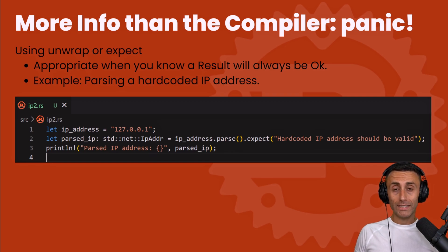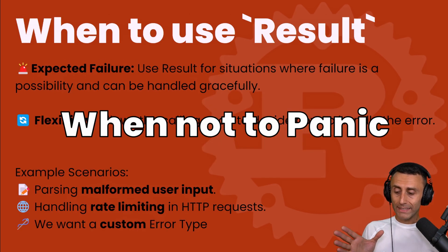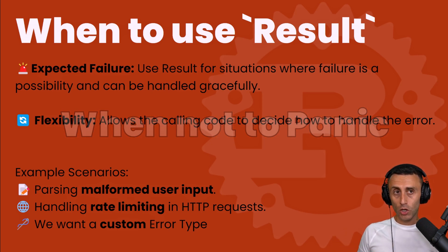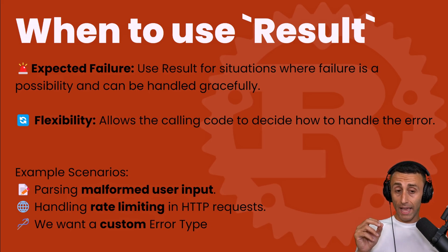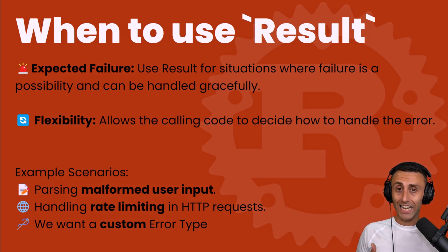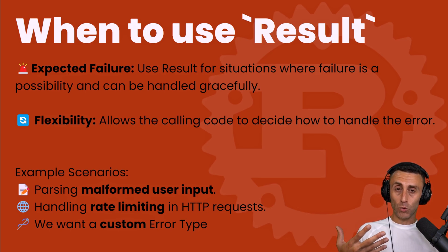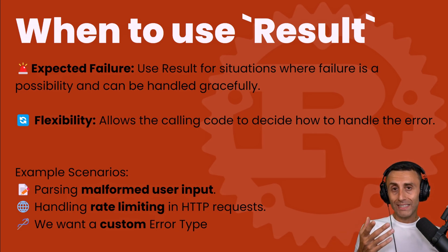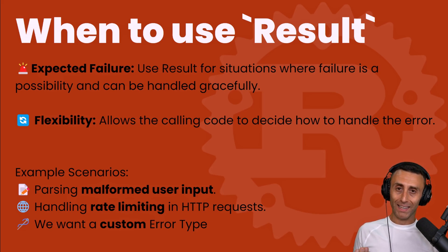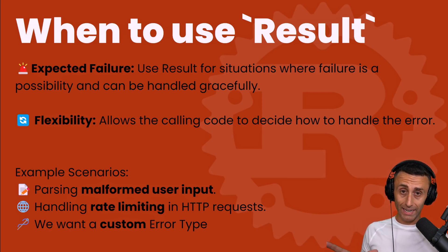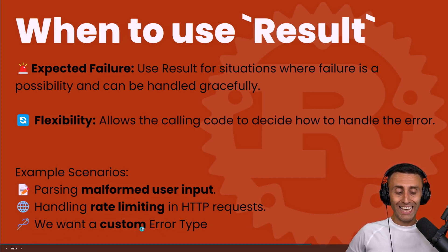Now let's see when to use result. Result is used to handle errors when we have an expected failure. A clear use case is HTTP requests, where we handle codes like 200, 300, and 400. Another use case is when we want the code to be more flexible — we decide to handle the error rather than stopping execution. Examples include getting unexpected user input, handling rate limiting in HTTP requests, and creating custom error types.